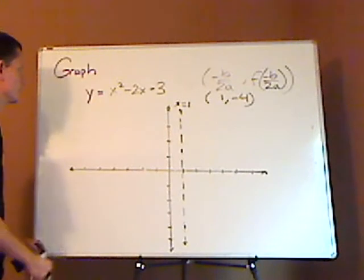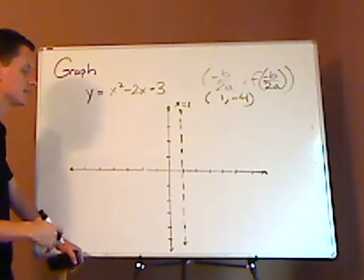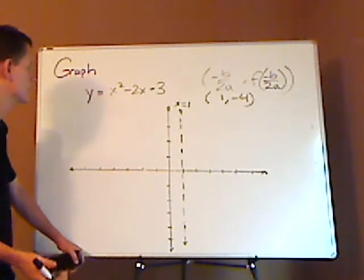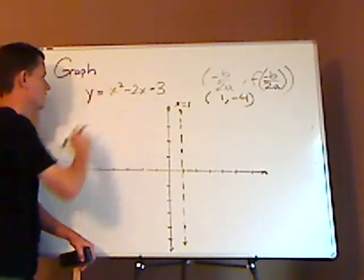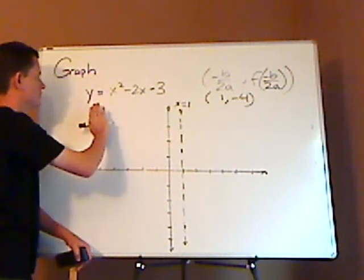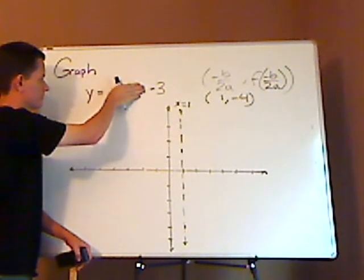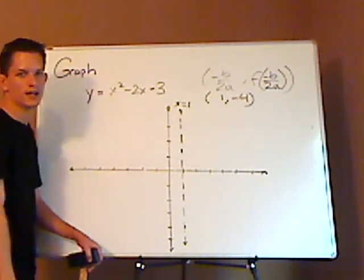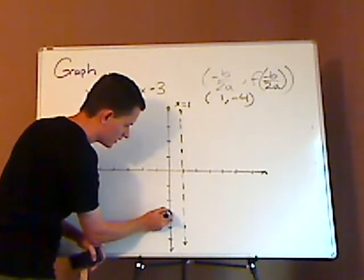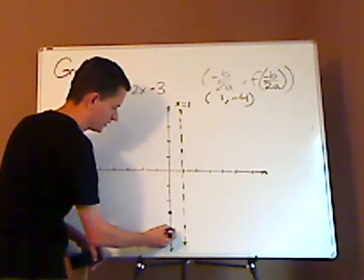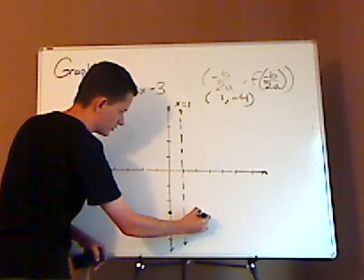Now what I can do here is just simply look for the y-intercept. That's the easiest thing to do when it's in standard form like this. You plug in 0, that cancels, that cancels, and it leaves you with negative 3. So that would be your y-intercept. So that's right there, and again the axis of symmetry is right there.